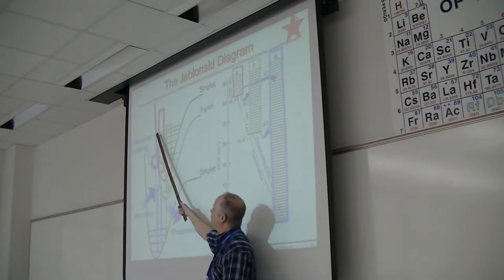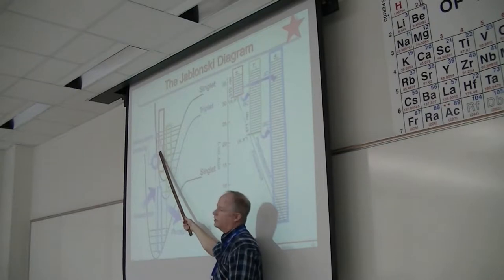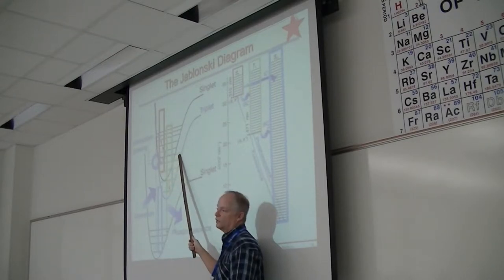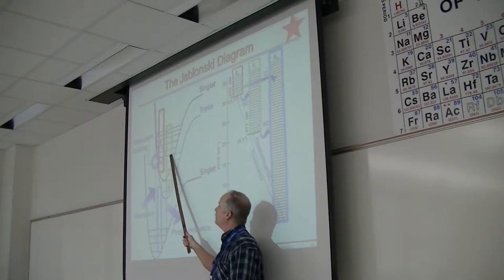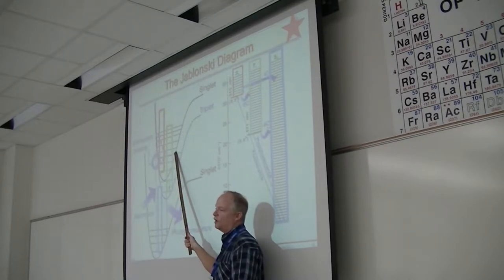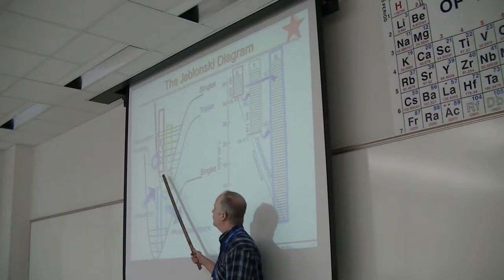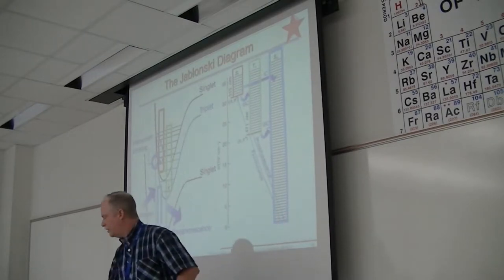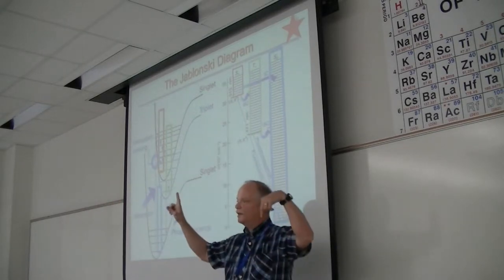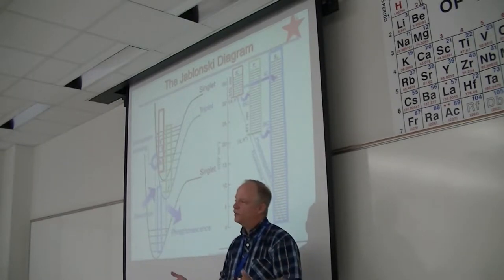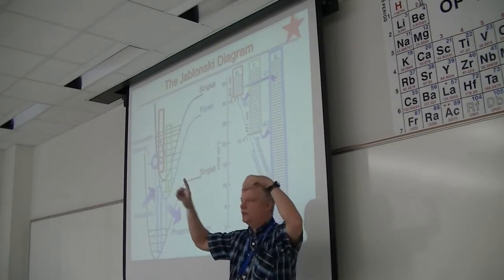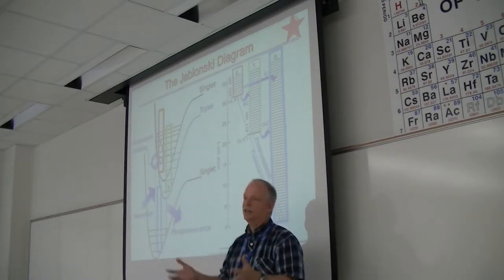The reason we know the triplet state exists is because once something is excited to the singlet excited state and relaxes down, it can cross over to the triplet state while relaxing. At some vibrational level, the energy is the same whether it's a singlet or a triplet — all that's required is a spin flip of an electron, and now it's on a different surface. The triplet state is almost always lower energy than the singlet because unpaired electrons placed in different orbitals are farther apart — that's naturally lower energy.